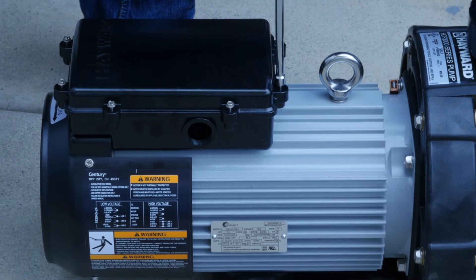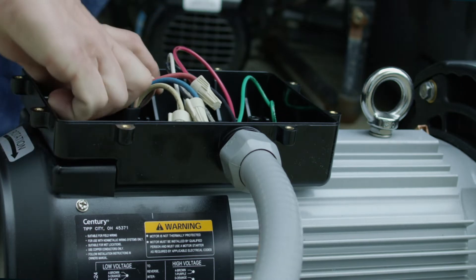3-inch unions allow for a seamless retrofit with any existing standard plumbing. The electrical box is conveniently positioned on the top of the pump for easy access and wiring.